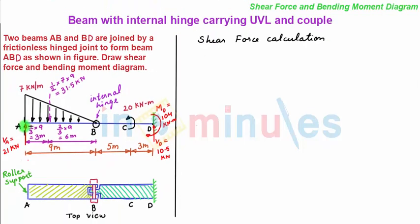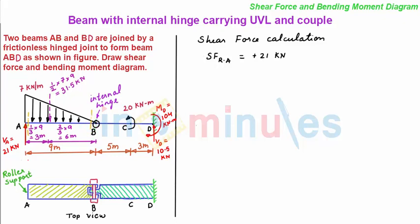We first take a section at point A and move towards point D. Taking a section to the right of A and very near to it, the shear force to the right of A equals plus 21 kN, since considering the left-hand side there is only an upward vertical support reaction of 21 kN. Moving the section towards point B, taking a section to the left of B and very near to it, we have the upward reaction of 21 kN minus the downward uniformly varying load of 31.5 kN, giving a shear force of minus 10.5 kN.